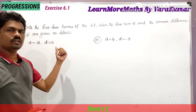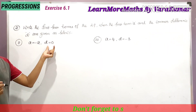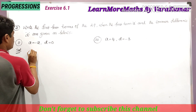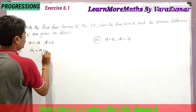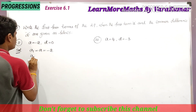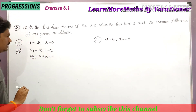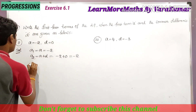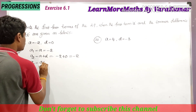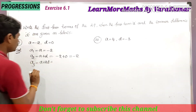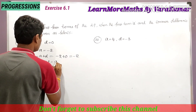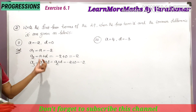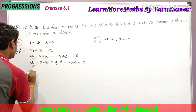In the second bit of the second problem, a is equal to minus 2 and d is equal to 0. The first term a1 is equal to minus 2. The second term a2 is equal to a plus d, that is minus 2 plus 0, which is minus 2. The third term a3 can be written as a plus 2d or a2 plus d, giving minus 2 plus 0, which is again minus 2.